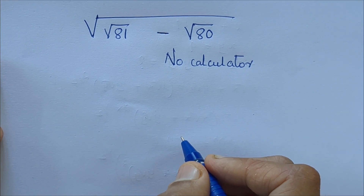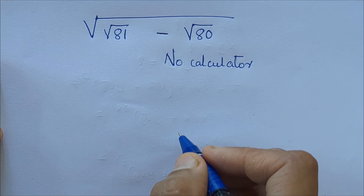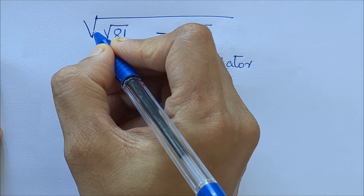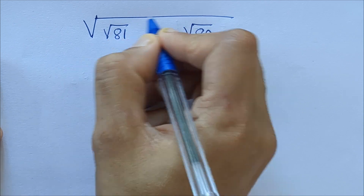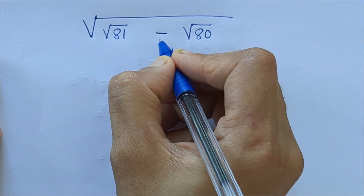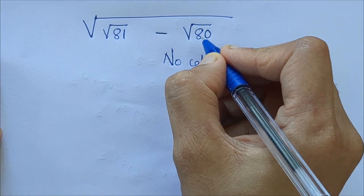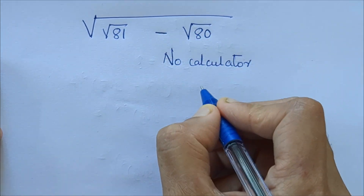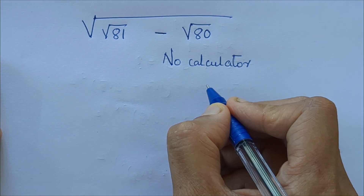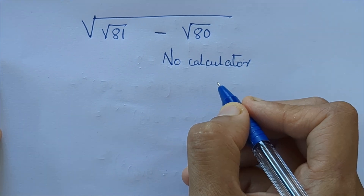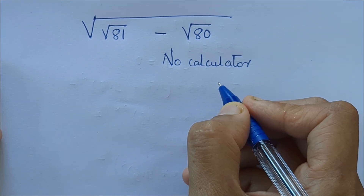Hello everyone, it's me Sitara. So here we want to find the root of root 81 minus root 80, and we have to do it without a calculator. How can we do it?